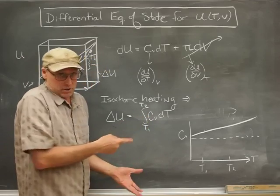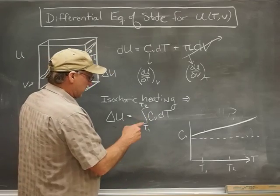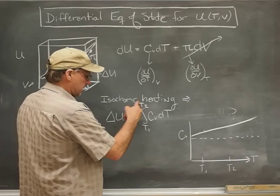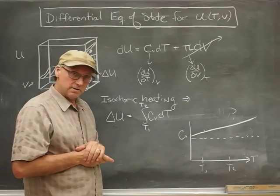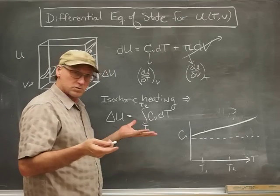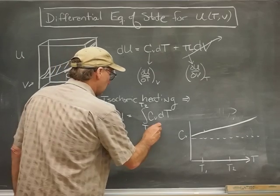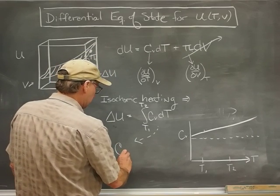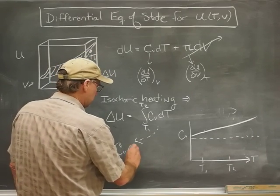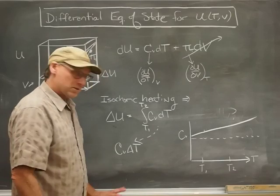If Cv doesn't change, if it's temperature independent, you can imagine that Cv comes out of that integral, and then what we're left with is the integral of dT. And the integral of dT is just the change in temperature. So in the case of Cv constant, we just get that delta U equals Cv times the change in the temperature.